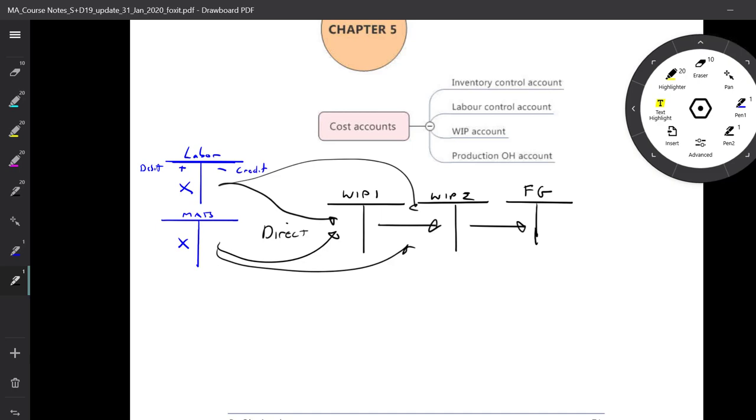So we've got, essentially, three categories of inventory: raw materials, work in progress, finished goods, always out from the credit, in from the debit.